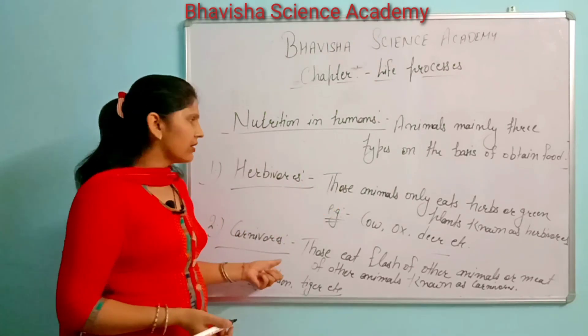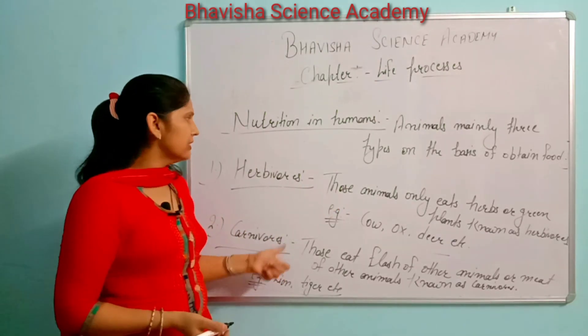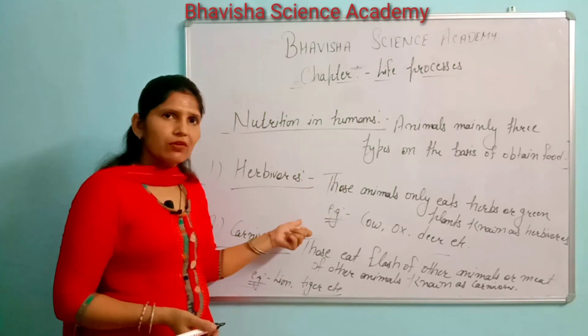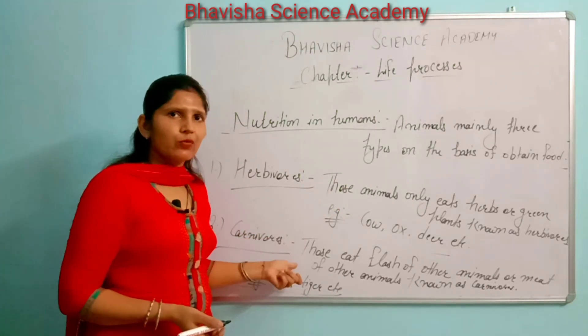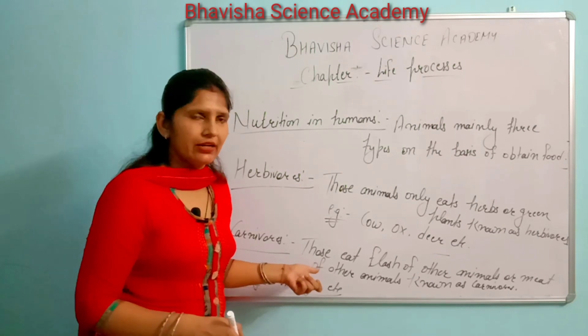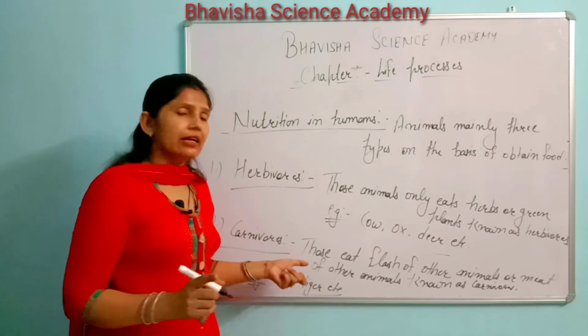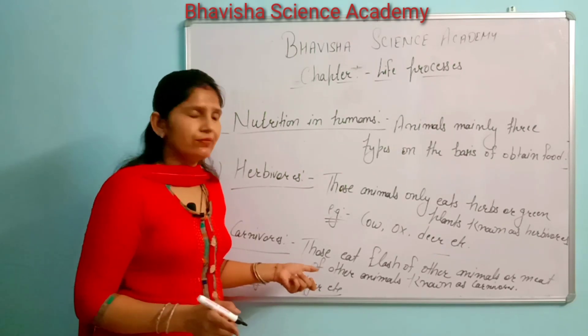Herbivores eat herbs, so they are known as first consumers. Carnivores eat the herbivores, that's why they are known as secondary carnivores.